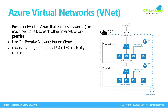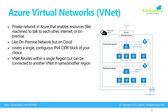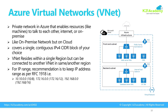Now what is a CIDR block? I'll explain it in a minute. When you create a network, you will be selecting a CIDR block of your choice that will give you a range of IP addresses inside that network. VNet resides within a single region — a region is a geographical location where Microsoft Azure has their data center. A VNet resides within a region, but it can connect to another VNet within the same region, to another VNet in a different region, or to your on-premise network.